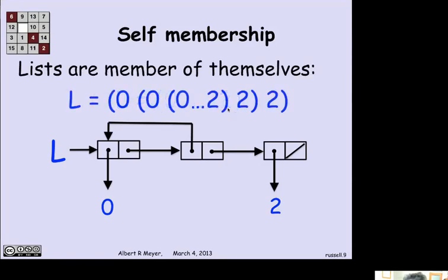And if you sort of expand it out, L is this list that begins with 0. And then its second element is a list that begins with 0. And the second element of that list is a list that begins with 0, and so on. And then the third element of L is 2. And the third element of the second element of L is 2, and so on. It's an interesting infinite nested structure that's nicely represented by this finite circular list.